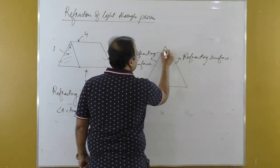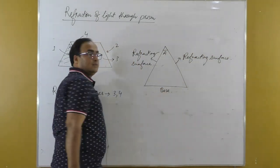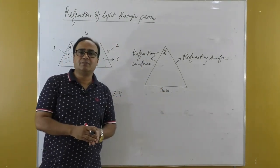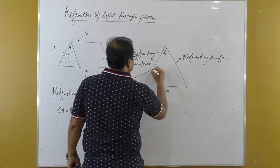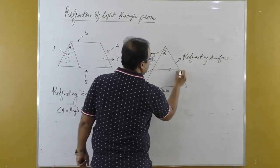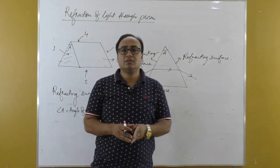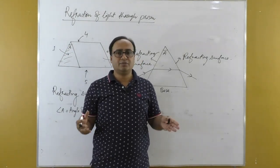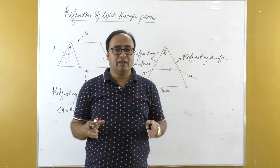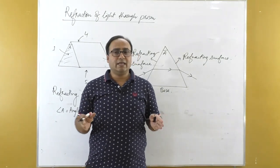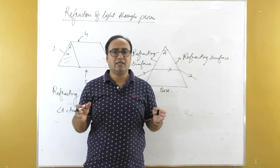This angle is called angle of prism and this lower surface is called the base of the prism. There are two refracting surfaces in a prism. For convenience, we draw the outline of the triangular surface to represent the prism. This surface and this one are refracting surfaces, this is the base, and this angle is the angle of prism. A ray of light incident obliquely on the prism — this point is the point of incidence. If we draw a perpendicular here, this perpendicular is the normal.